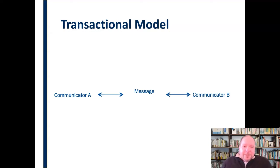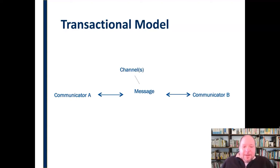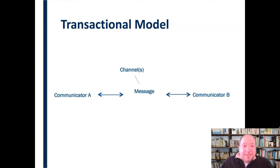Communicator A has a message they wish to communicate to Communicator B — some content they want that person to understand. They're going to try to encode that in a way the other person can understand and decode effectively. The how of communicating is what we call channel. Are you texting this person, emailing, speaking face-to-face, talking over the phone, or sending smoke signals or post-it notes? That's the channel. The message is the what of what's being communicated; the channel is how that message is communicated.